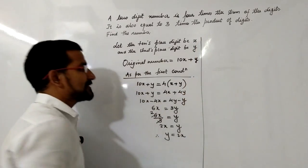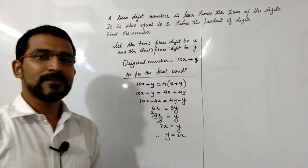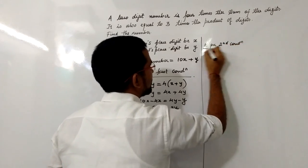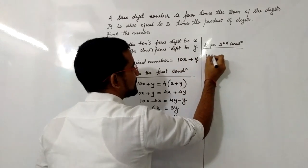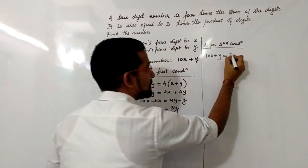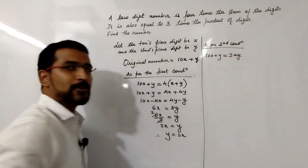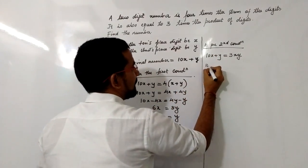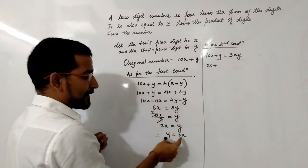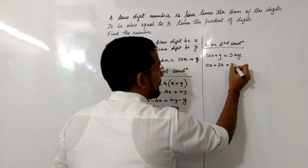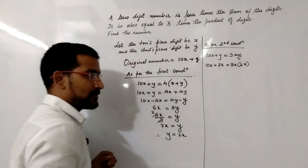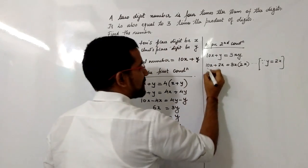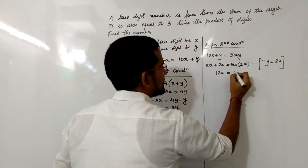The second condition is: the two-digit number is also equal to 3 times the product of its digits. So 10x + y = 3 × (x × y). The digits are x and y, so their product is xy. Now in the place of y, we substitute 2x. So the equation becomes 10x + 2x = 3x × 2x.